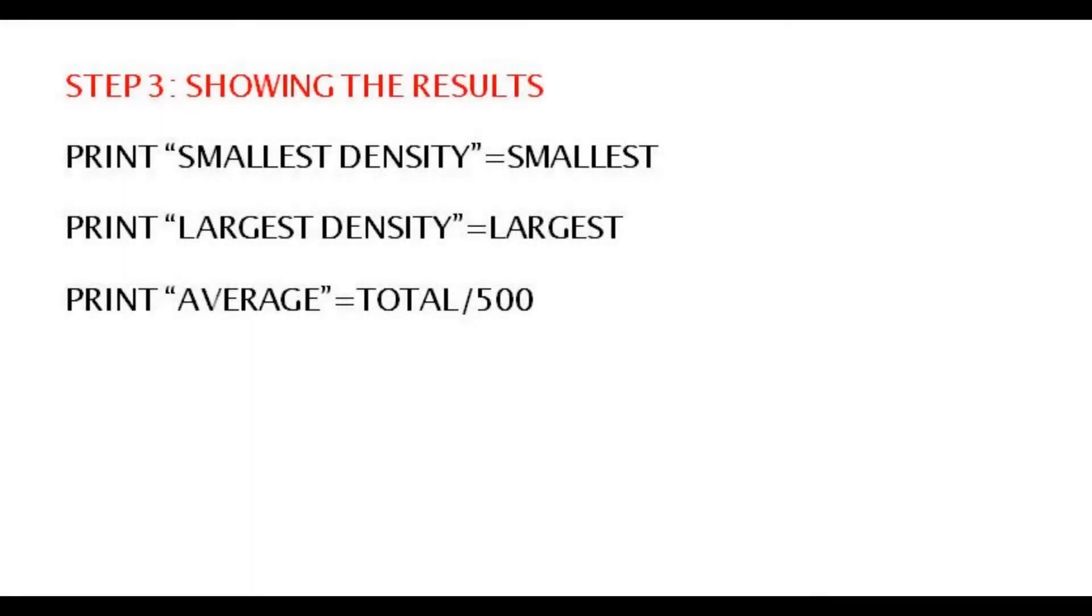Step 3 is showing the results to the viewer at the end. The last 3 steps are print in commas, smallest density equals smallest. Print in commas, largest density equals largest. And print in commas, average equals total divided by 500.